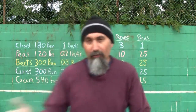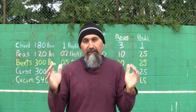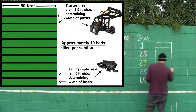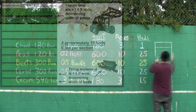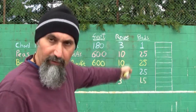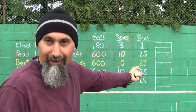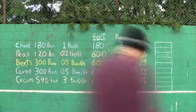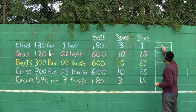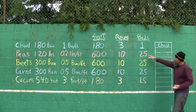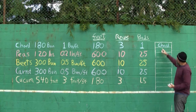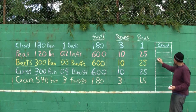Now we can draw our section and see exactly what our field looks like. This is our blank slate, our blank section, and all we have to do is take the number of beds and fill up our space to figure out what our field is going to look like. So we've got one bed of chard — this area is all going to be chard — and then 2.5 beds of peas.